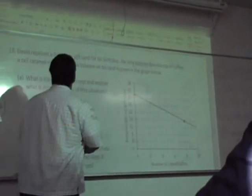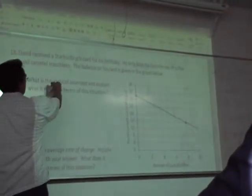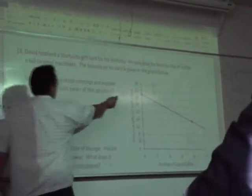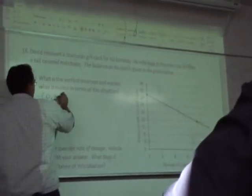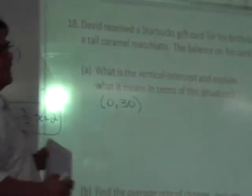What is the vertical intercept? Give me the coordinates for this point. Zero, thirty. Very nice. Did everyone get 30? Excellent.